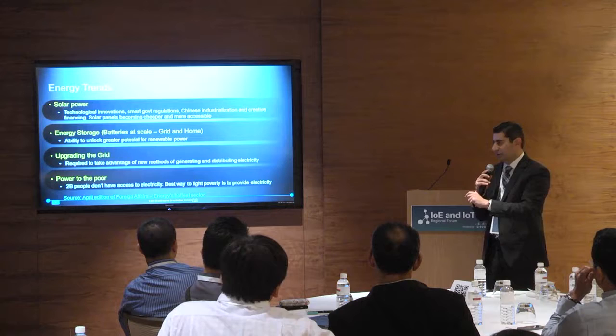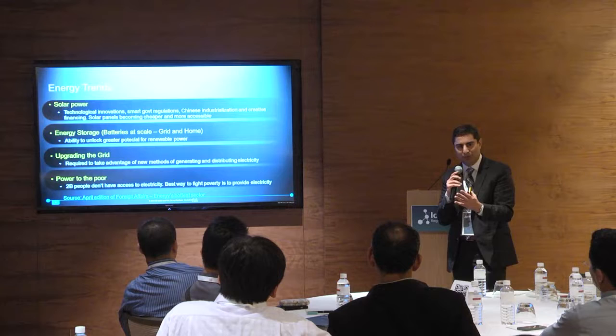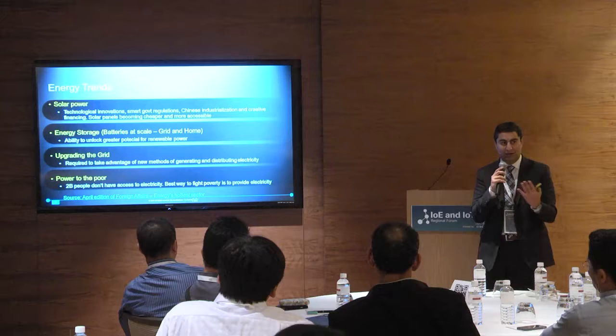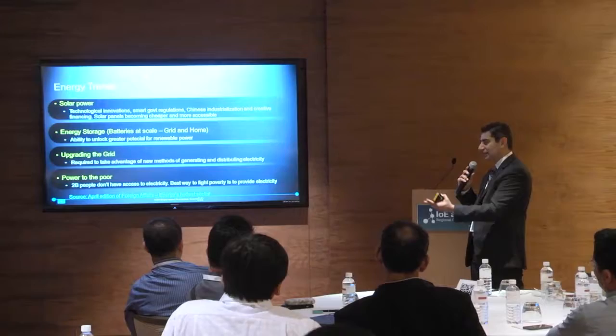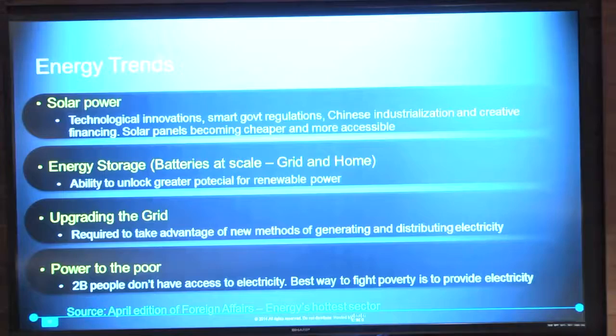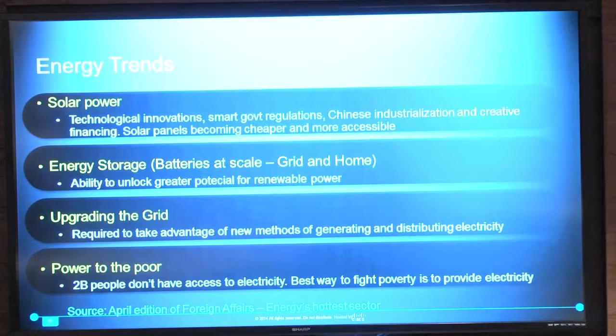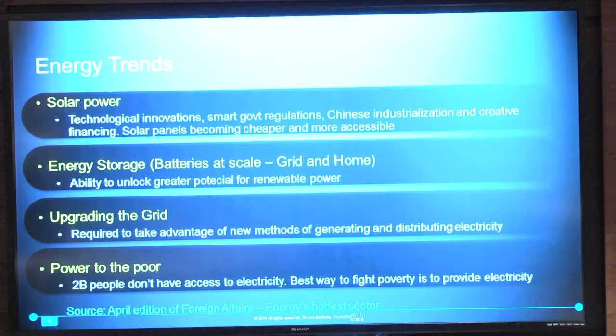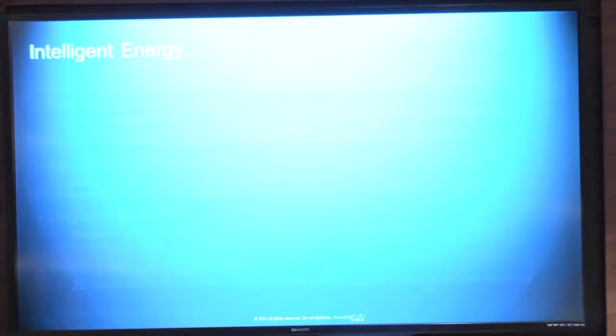There's also another spin: power to the poor. There are two billion people out of seven billion in the world who don't have access to electricity — an alarming number. The thought process is: if you want to fight poverty, give people electricity. With electricity you have access to education through the internet and access to jobs because you can connect remotely. So there are a lot of benefits to being able to do this. But how do you do that in remote areas where you can't extend your grid? Are there other technologies you can implement to get there?